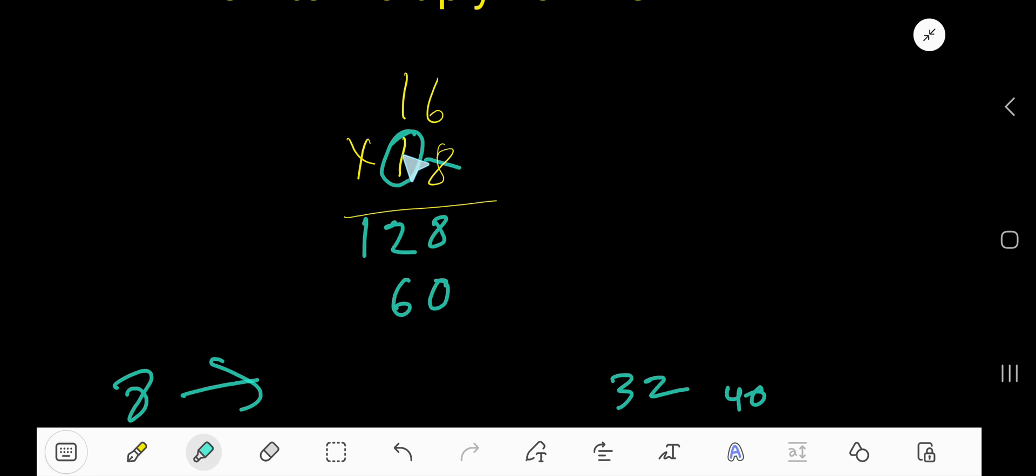So, 1 times 1, 1, just add times 0, 8, 6 plus 2, 8, 1 plus 1, 2.